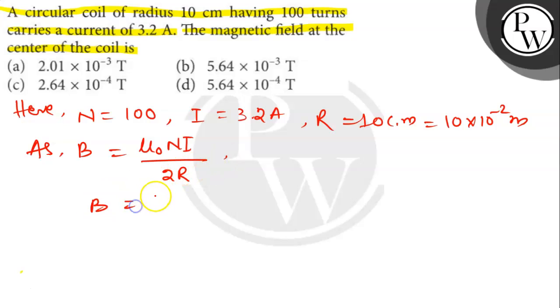So B equals, we put the values here: 4π × 10 to the power minus 7 × 100 × 3.2 Ampere which is current, whole divided by 2 times R is 0.1.